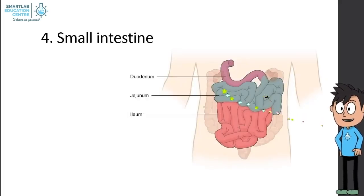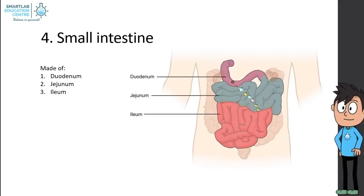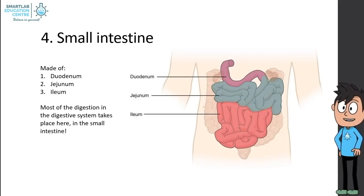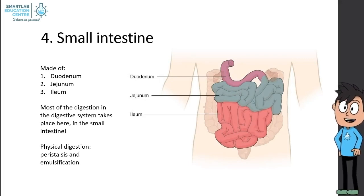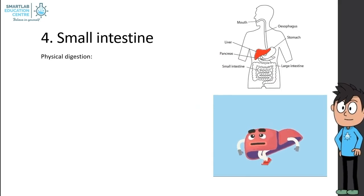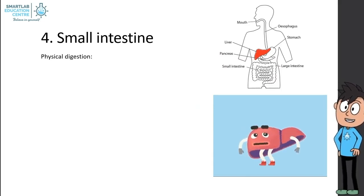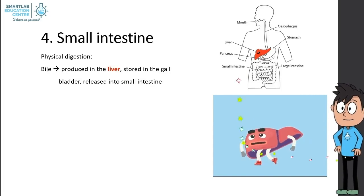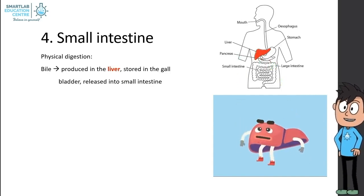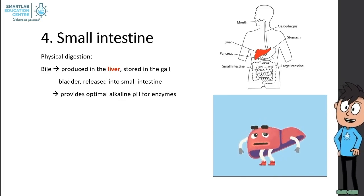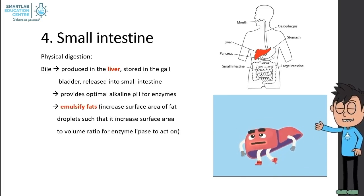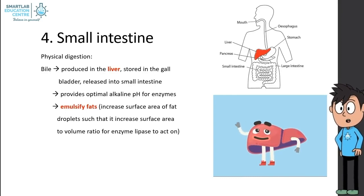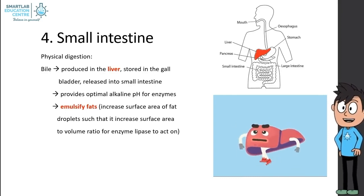The fourth organ is the small intestine, made up of the duodenum, jejunum, and ileum. Most of the digestion in the digestive system takes place here. Physical digestion includes peristalsis and emulsification. Bile, produced in the liver and stored in the gallbladder, is released into the small intestine. It provides an optimal alkaline pH for enzymes and emulsifies fats by increasing the surface area of fat droplets, increasing the surface area to volume ratio for enzyme lipase to act on.